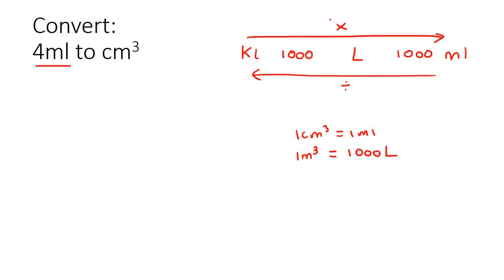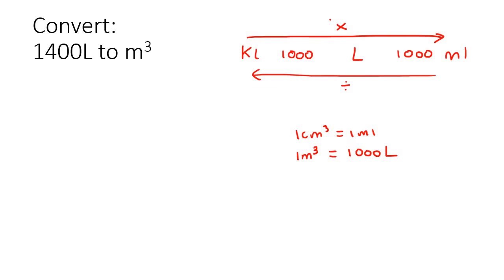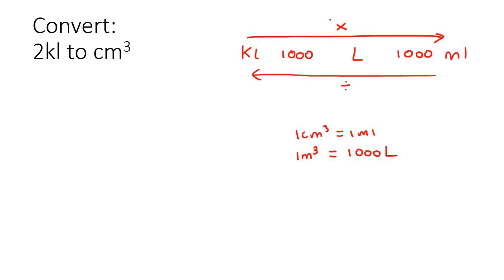Here's a cool one: converting millilitres to centimetres cubed. You just need to know that they are the same — 1 millilitre equals 1 centimetre cubed. So 4 millilitres equals 4 centimetres cubed. Next example: 1,400 litres to metres cubed. We know that 1,000 litres equals 1 metre cubed, so we need to divide. 1,400 divided by 1,000 gives us 1.4 metres cubed.